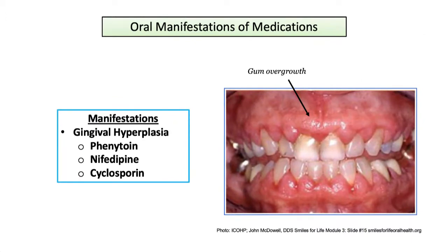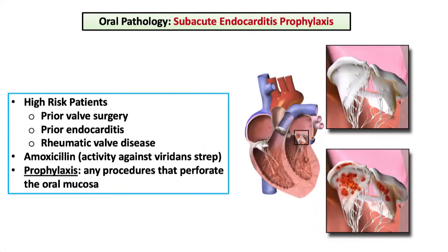Gingival hyperplasia, defined as gum overgrowth around the teeth, can occur with use of phenytoin, an anti-seizure medication; nifedipine, a calcium channel blocker; and cyclosporine, an immunosuppressant. This is not uncommon and you will most assuredly encounter this entity in your clinical careers.